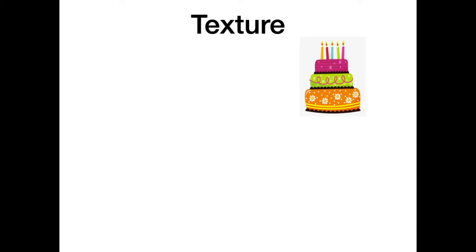So, texture — what is it? You'll see a picture of a birthday cake there, and I'll reveal what that's all about in a moment. Texture is the layers of music — all the different parts like the accompaniment, the rhythm, the melody, the harmony, etc. The analogy of a cake is probably the most clear way to understand this.